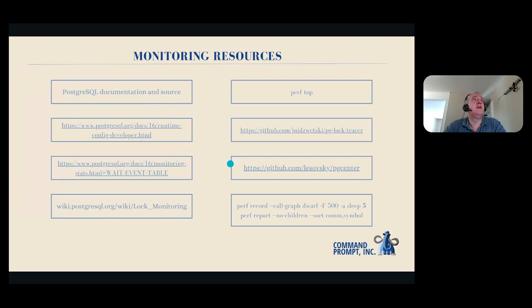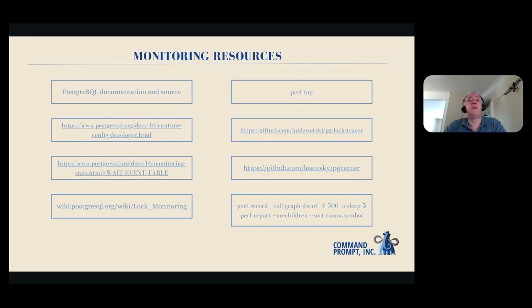I'm including a slide about various resources. If you have problems or suspect you have problems or are just interested, don't be afraid to look at the Postgres documentation and specifically the source code. I'm repeatedly surprised by the level of documentation and notes inside the Postgres source code — there are big sections of text that even if you're not familiar with C, you're able to get a good idea of how things work in much greater detail than what's available in the documentation. There's also PG Lock Tracer, which collects statistics about lock usage, and PG Center, which is like Linux top for Postgres. Monitoring lightweight locks requires going into the realm of kernel monitoring — setting up traps on given function calls — which is a huge topic on its own.